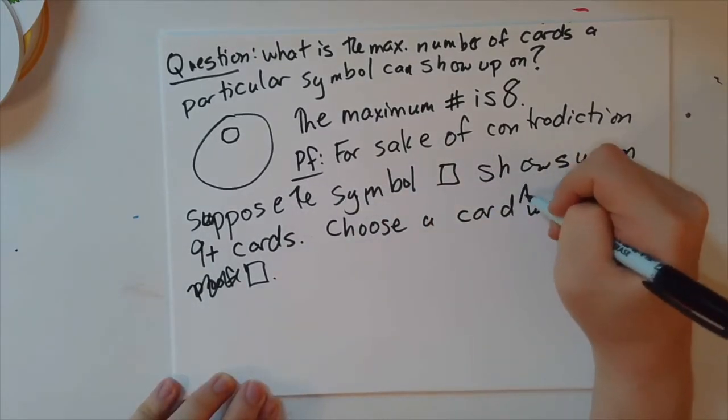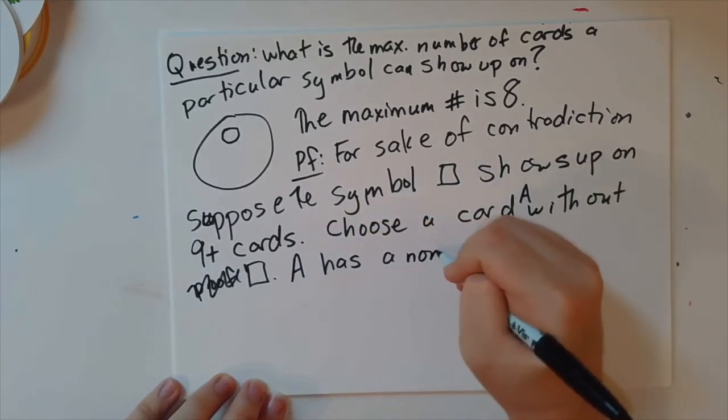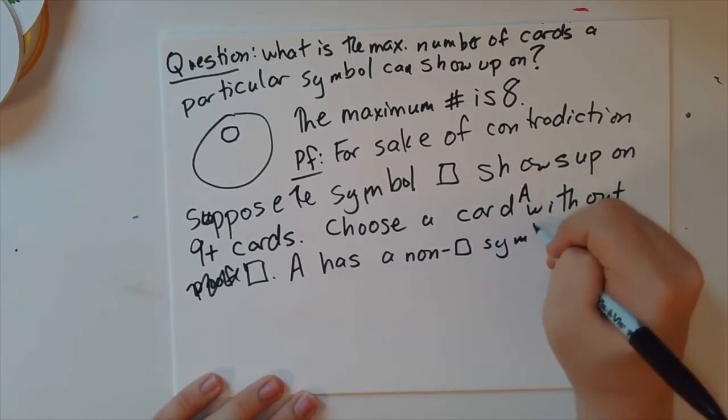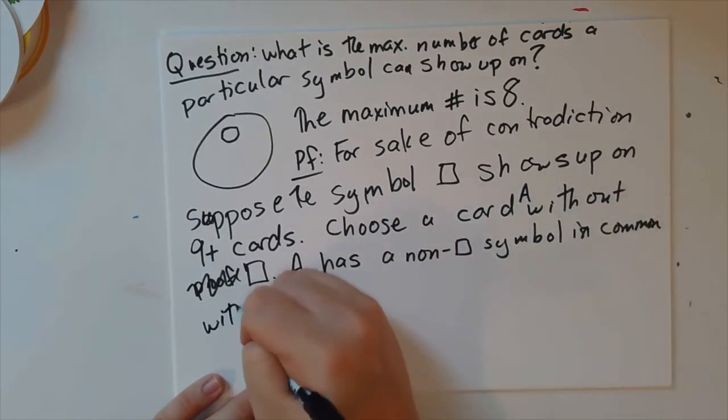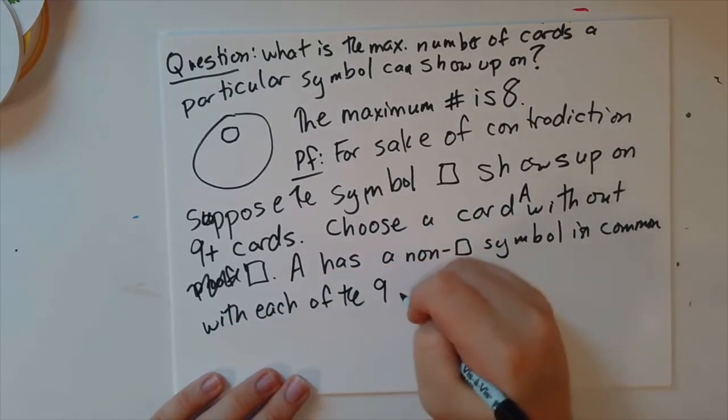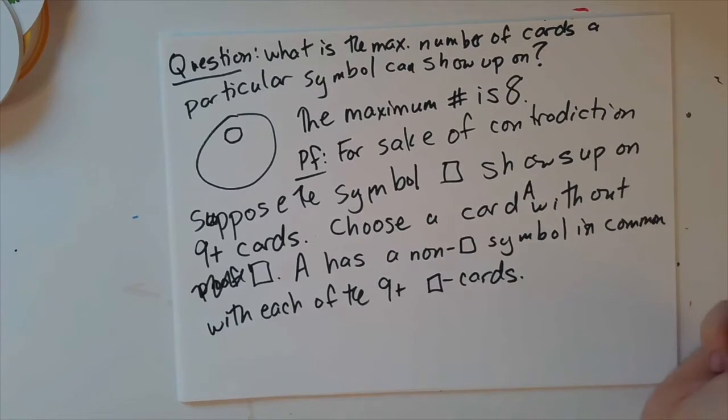And I'll call this card A. A has a non-proof box symbol in common with each of those nine plus cards. That's, again, just our assumption that every pair of cards have something in common.